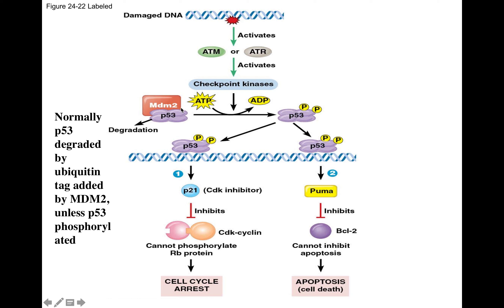Normally, there is a protein called P53, which is a tetramer with four different subunits. P53 is normally made and then destroyed — MDM2 attaches ubiquitin to it and it degrades via the proteasome. When DNA damage activates the kinase, it phosphorylates P53, and when P53 is phosphorylated, MDM2 can no longer ubiquitinate it, so P53 builds up inside the cell.